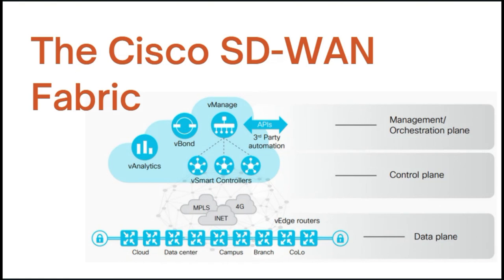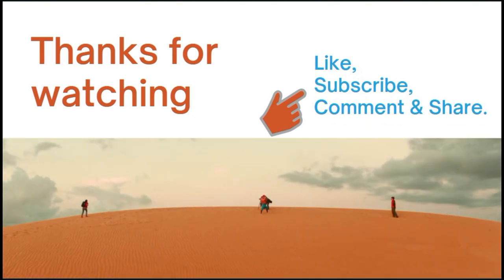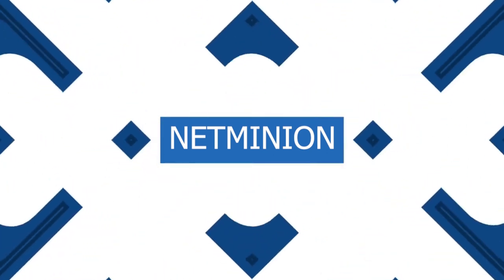To summarize: Cisco SD-WAN is a secure, cloud-scale architecture that is open, programmable, and scalable. Through the Cisco vManage console, we can quickly establish an SD-WAN overlay fabric to connect data centers, branches, campuses, and co-location facilities to improve network speed, security, and efficiency. The controllers can be managed by different APIs or third-party automation tools. Thanks for watching — if you learned something new, please like, subscribe, comment, and share. See you in the next video.